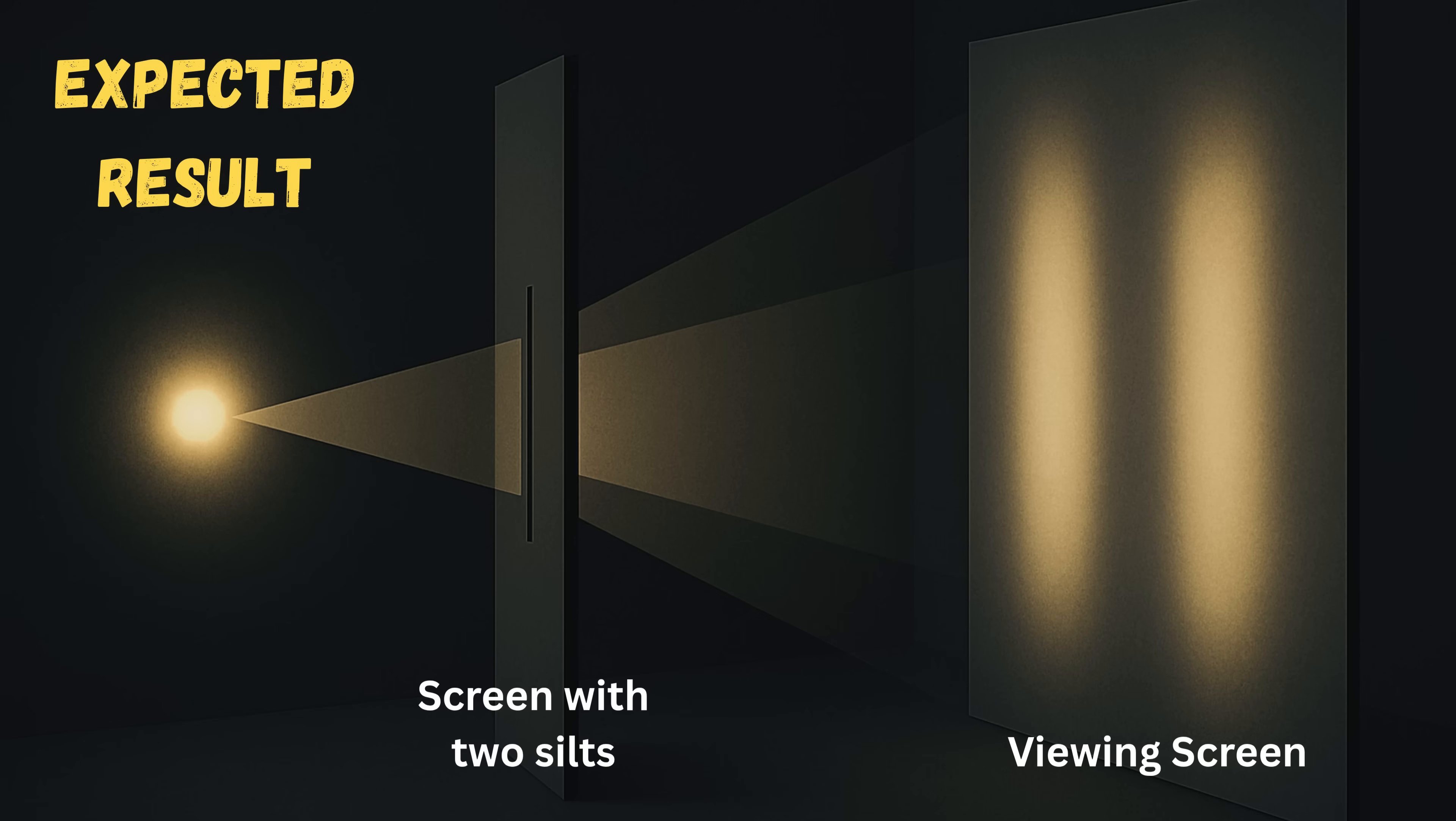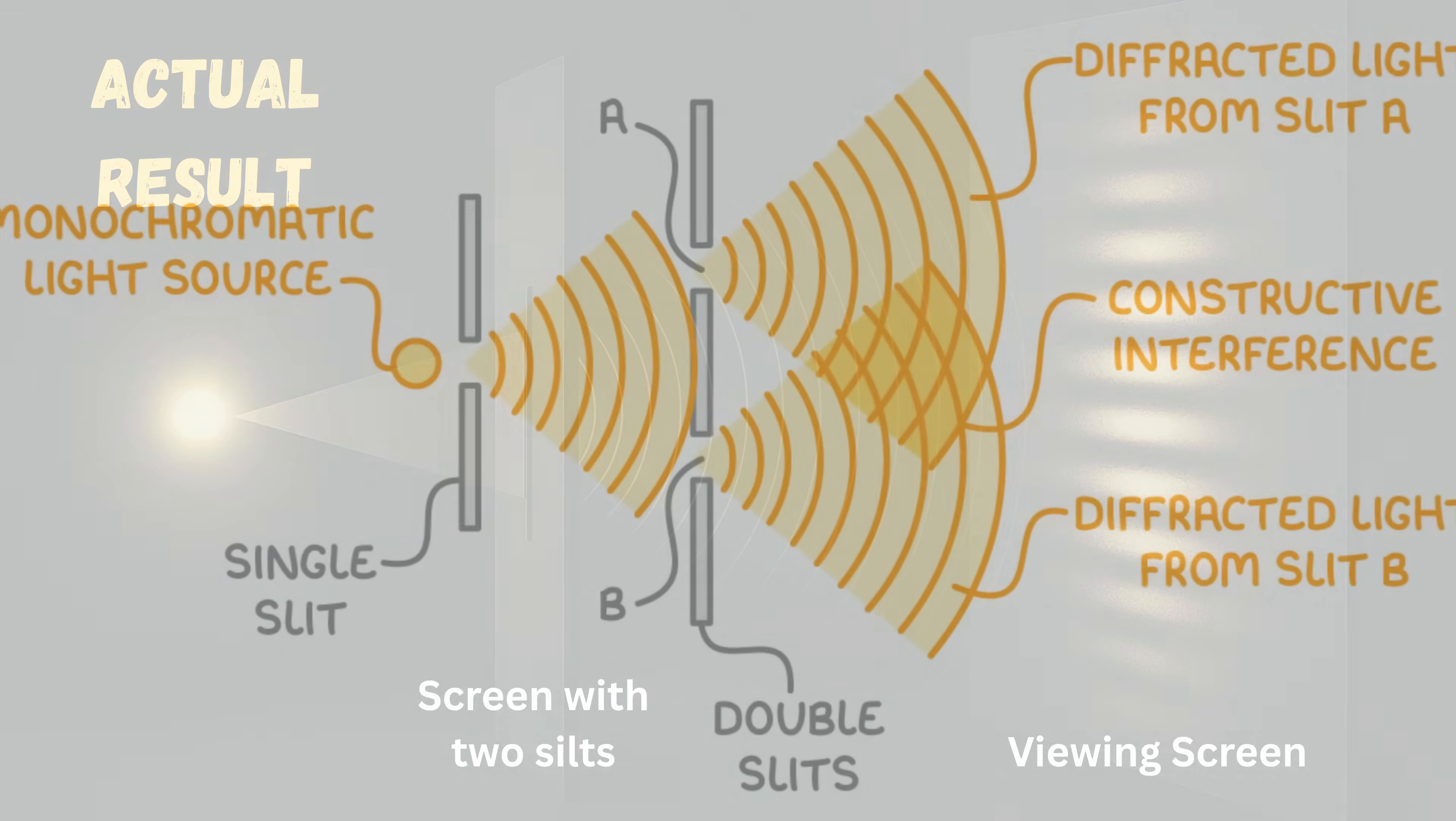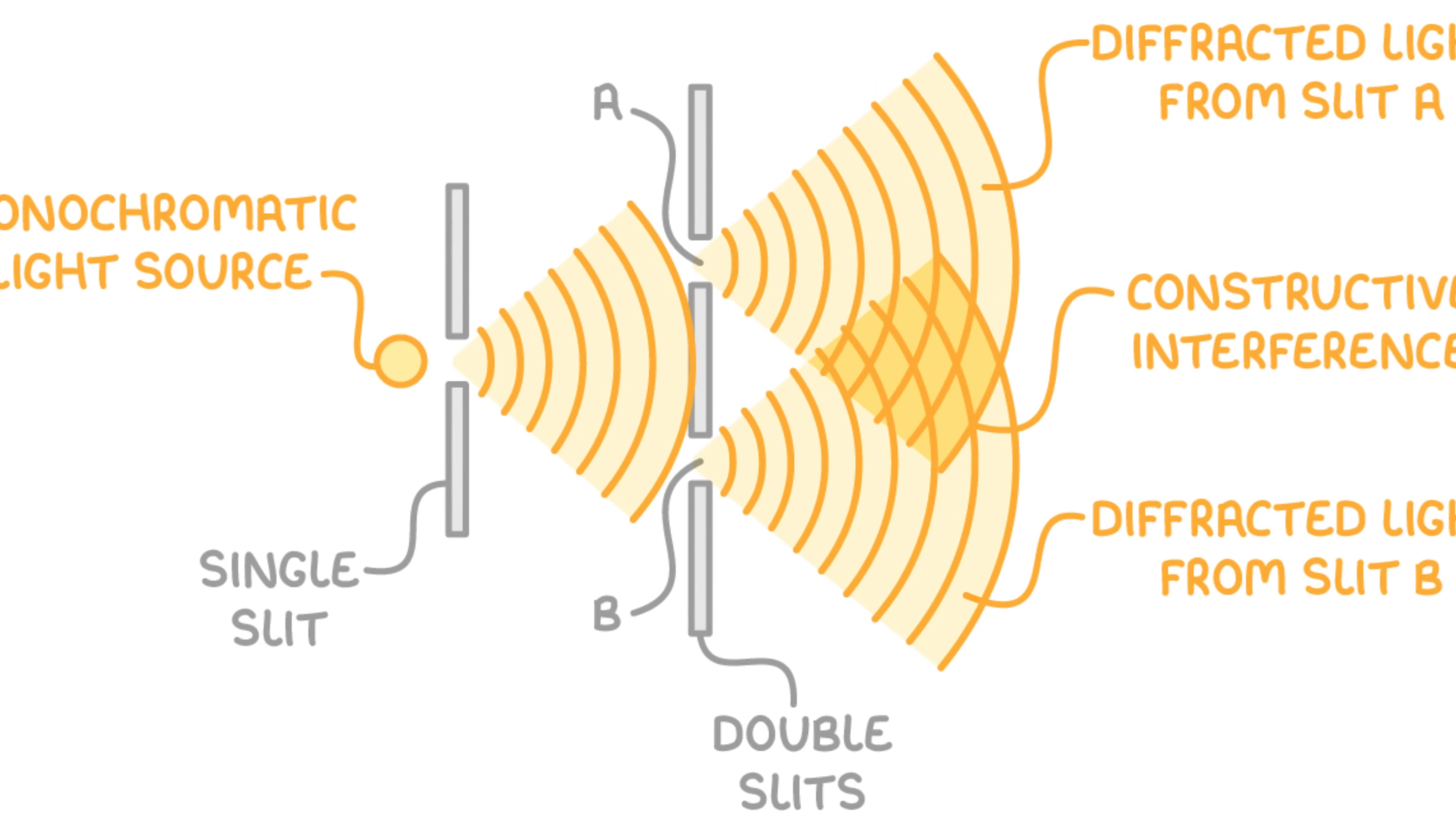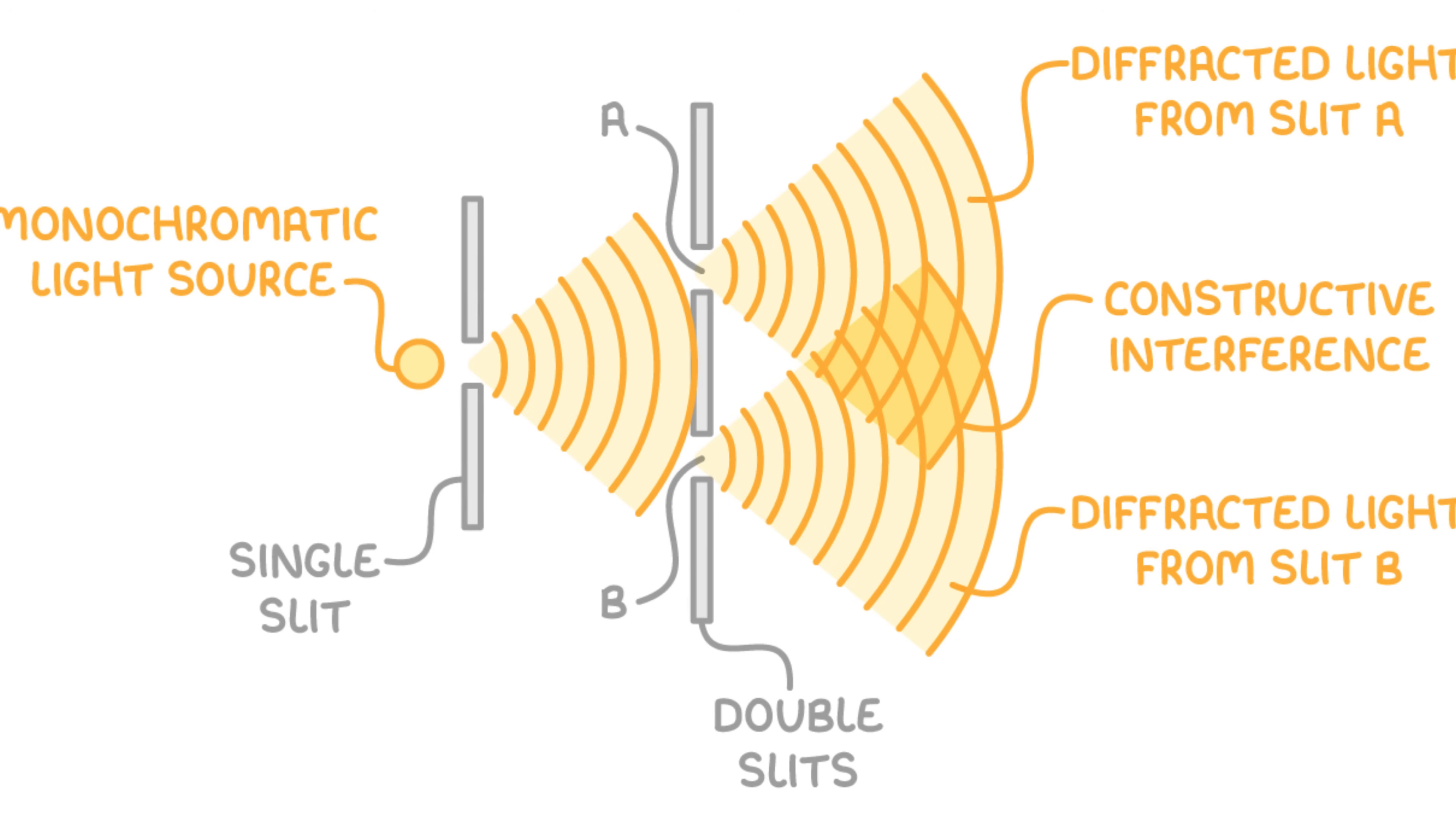If light were made of particles, we should see two distinct bands where the light passed through the slits. But instead, Young saw something completely different, an interference pattern, just like waves. The light was spreading out and interfering with itself, forming alternating bright and dark regions on the screen. The bright areas corresponded to where the waves reinforced each other, called constructive interference, while the dark areas appeared where waves canceled each other out, called destructive interference.